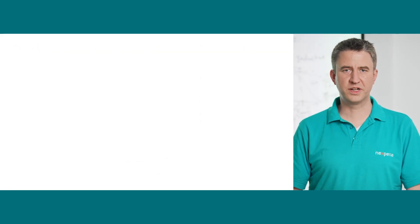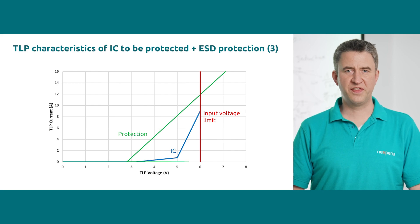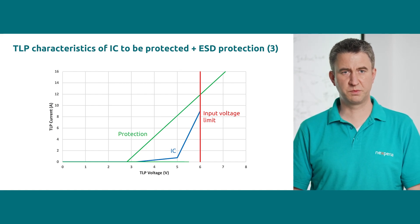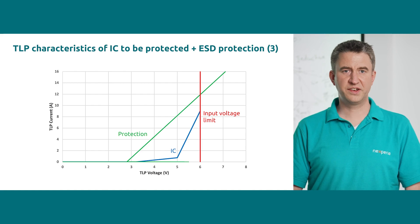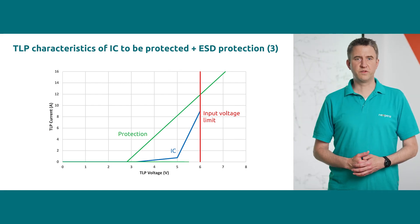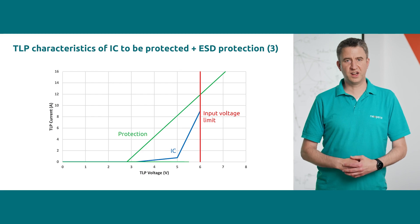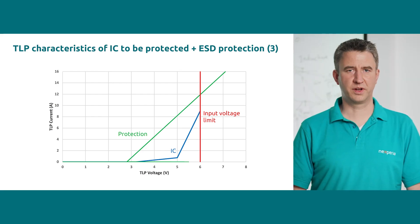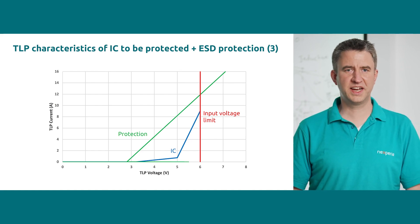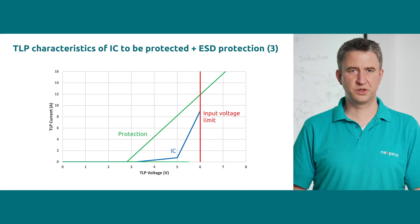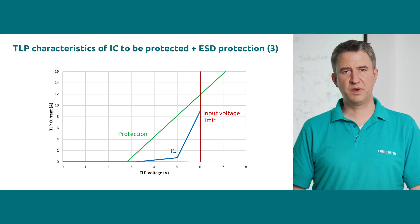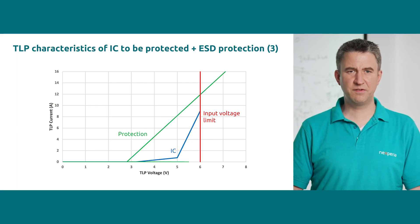In the next case, the external ESD protection triggers at a lower voltage than the IC's internal protection and stays low even for higher currents. This means that the external protection triggers before the IC's internal protection and takes the majority of the ESD current — the IC is well protected. Only if we start considering a maximum input voltage, shown by the red line, we start seeing a problem. The clamping curve of the external protection hits the maximum voltage at 12 amp TLP, indicating that from this current level onwards, the voltage behind the external ESD protection may reach a level that is harmful for the IC. This can be solved by replacing the external protection with one featuring even lower turn-on resistance.